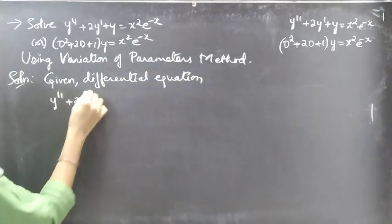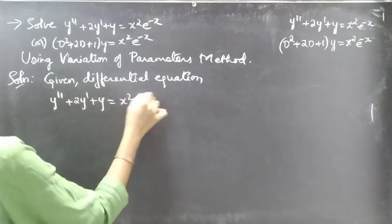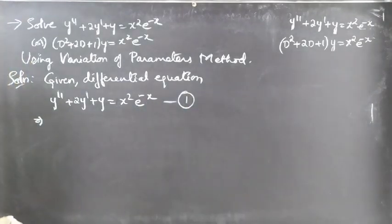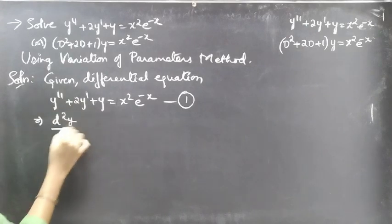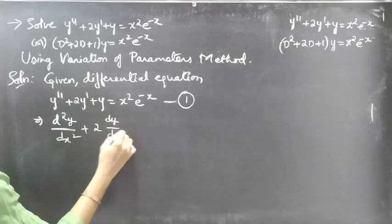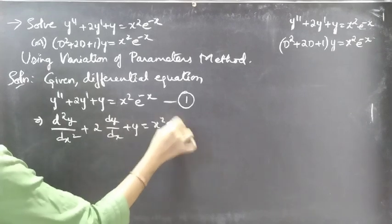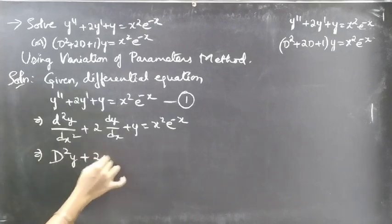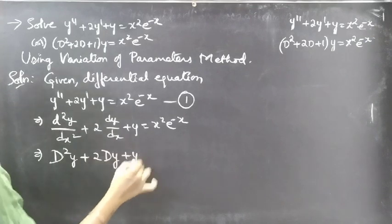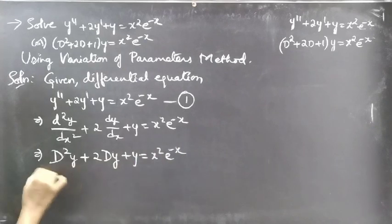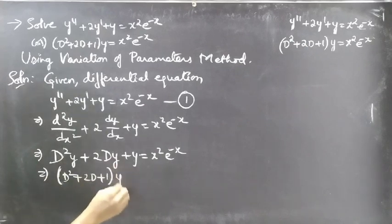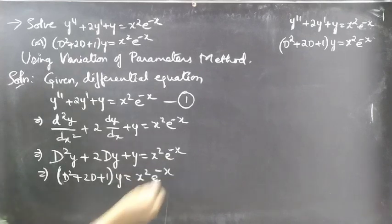Given the differential equation y'' + 2y' + y = x²e^(-x), we write y'' as D²y, and y' as Dy. So we get D²y + 2Dy + y = x²e^(-x). Taking y common from the LHS gives (D² + 2D + 1)y = x²e^(-x). Consider this as equation number 2 in operator form.